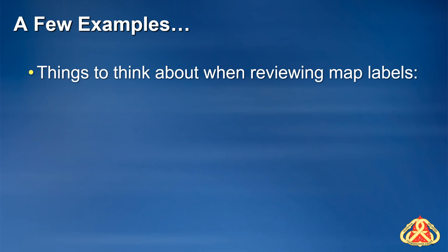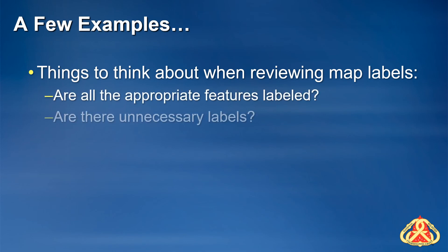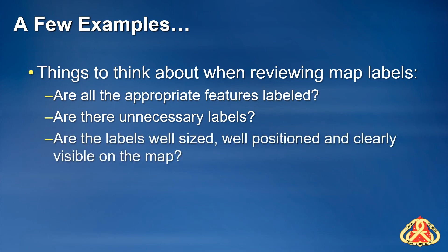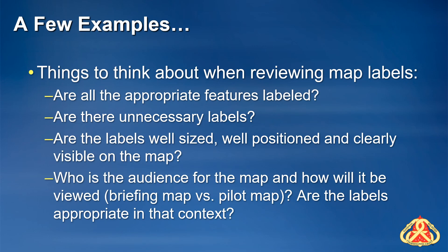You're going to see a lot of examples of maps on the internet and from other GISSs. As you're reviewing these maps, keep the following questions in mind: Are all the appropriate features on the map labeled? Are there non-incident feature labels that are unnecessary and add clutter to the map? Are the labels well-sized, well-positioned, and clearly visible? Who is the audience for the map and how will it be viewed? Some maps such as briefing maps are meant to be viewed from a distance; others such as IAP maps will be viewed in hand; still others may be designed for a tablet or smartphone. Are the labels appropriate for the context in which the map will be viewed?